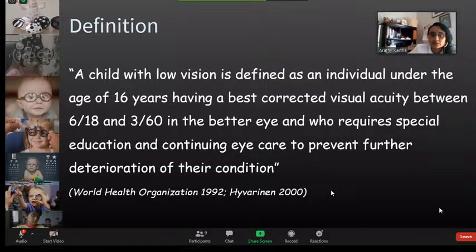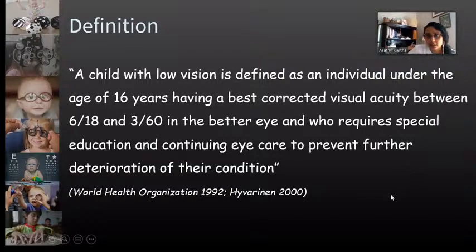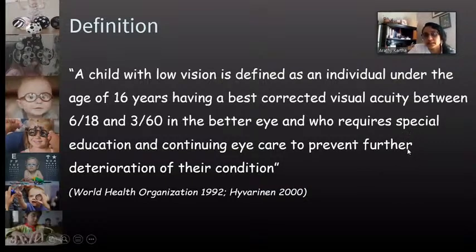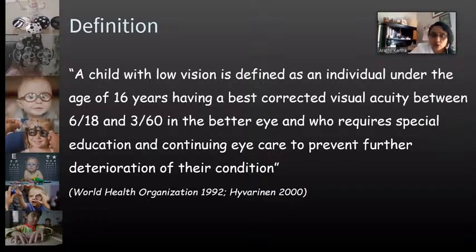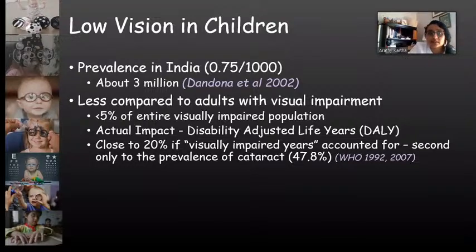A child with low vision has best corrected visual acuity between 6/18 and 3/60 in the better eye, and requires special education and continuing eye care to prevent further deterioration. Two key points: it applies to children under 16 years of age with significant visual impairment in that range, and they require both special education and continuing eye care. Regarding prevalence of low vision in children in India, it is about 0.75 per thousand, roughly three million children, based on 2002 statistics.